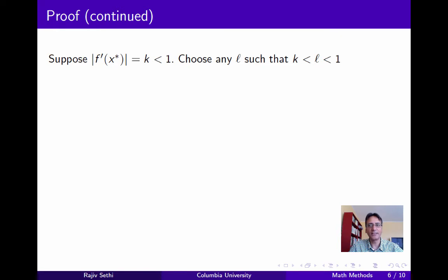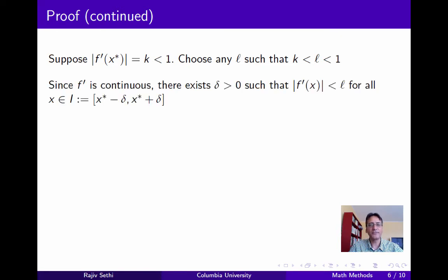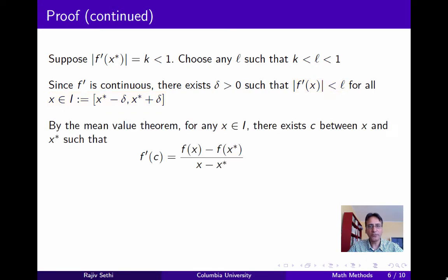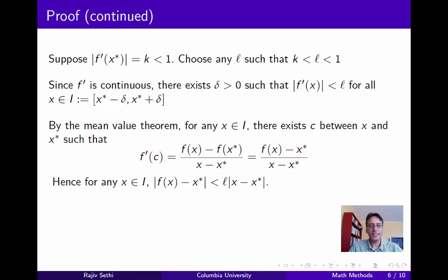Then we can find another number l that lies strictly between k and 1. Now since f is continuously differentiable, there must exist some delta positive and some closed interval [x-star minus delta, x-star plus delta], such that for all points x in this interval, the slope of the function at x has absolute value less than l. Now recall the mean value theorem, and note that for any x in this interval I, there exists some number c between x and x-star, such that the slope of the function at c equals the relevant expression. Now since x-star is a fixed point, we can replace f(x-star) with x-star, and hence for any x in the interval I, the distance between f(x) and x-star is less than l times the distance between x and x-star.